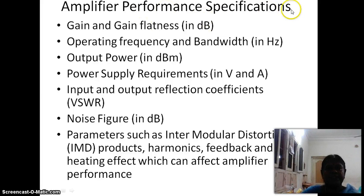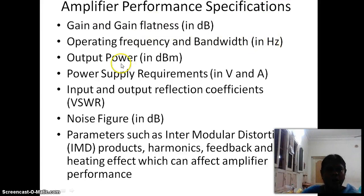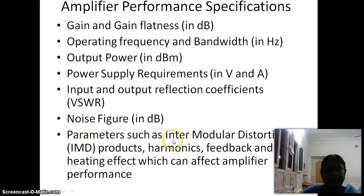Amplifier performance specifications — how do you specify the amplifier performance? Gain and gain flatness in dB, operating frequency and bandwidth in hertz, output power in dBm, power supply requirements in volts and ampere, input and output reflection coefficients VSWR, noise figure in dB, and parameters such as intermodulation distortion (IMD) products, harmonics, feedback and heating effect which can affect amplifier performance.